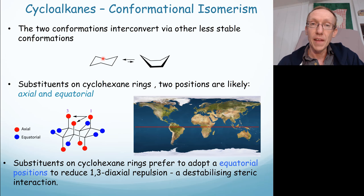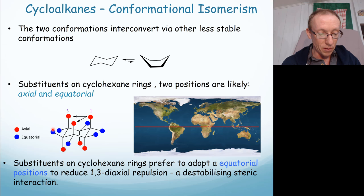Now, the substituents around that cyclohexane, if it's substituted, can occupy either those axial or equatorial positions. So here's another depiction of that, the red ones being axial and the blue ones being equatorial. They prefer to adopt these equatorial positions to reduce repulsions between axial groups.